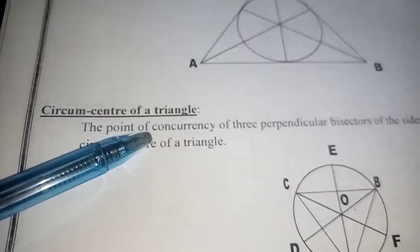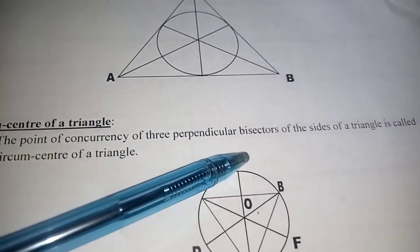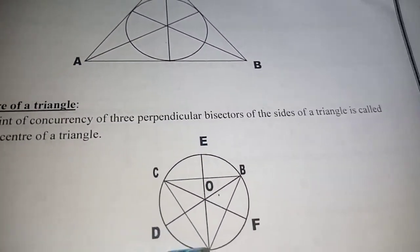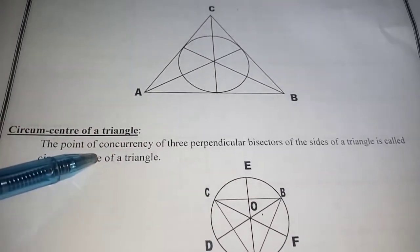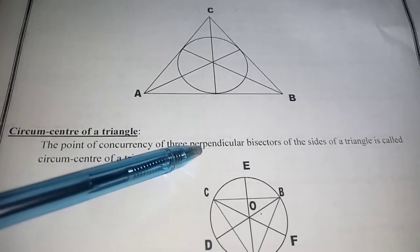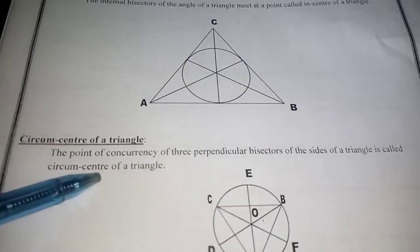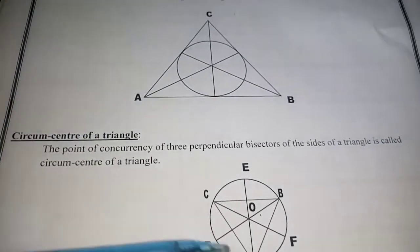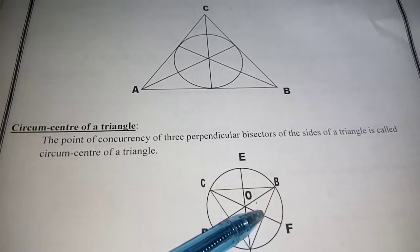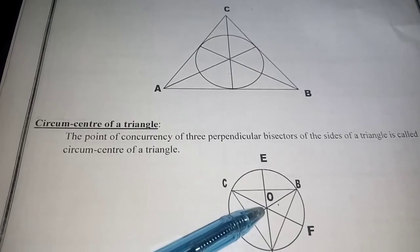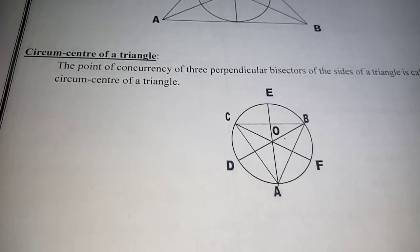Next, the circumcenter of a triangle: the point where the three perpendicular bisectors of the sides of a triangle meet is called the circumcenter. That is, the point of concurrency of the three perpendicular bisectors of the sides of a triangle is the circumcenter of the triangle.